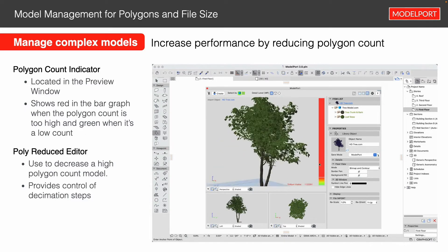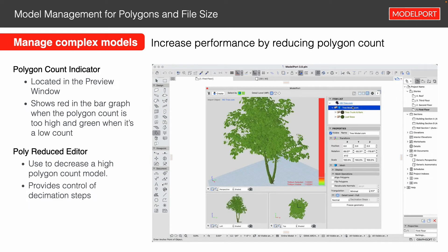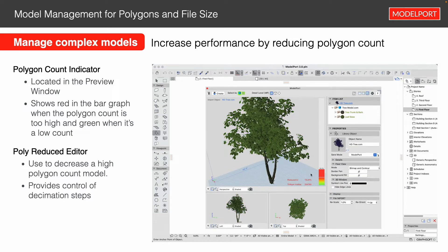So here we've got the tree, and we're ready to edit it. We simply select the tree object, then go to polyreduced, click freeze geometry, and then we can decimate the steps up or down — change it from two to three or one. Just by selecting that, without even getting into editing the decimation steps, which basically increases or decreases the amount of polygon reduction, we have really reduced down the amount of polygons. We've reduced this down to 18.24%, and we can go further down as well.